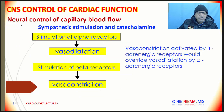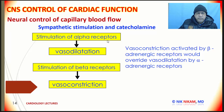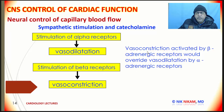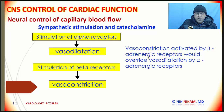Let's look at the neural control of capillary blood flow. Sympathetic stimulation of the alpha receptors leads to vasodilation, whereas stimulation of the beta receptors leads to vasoconstriction. However, the vasoconstriction activity by the beta adrenergic receptors would override the vasodilation by alpha adrenergic receptors during sympathetic stimulation.